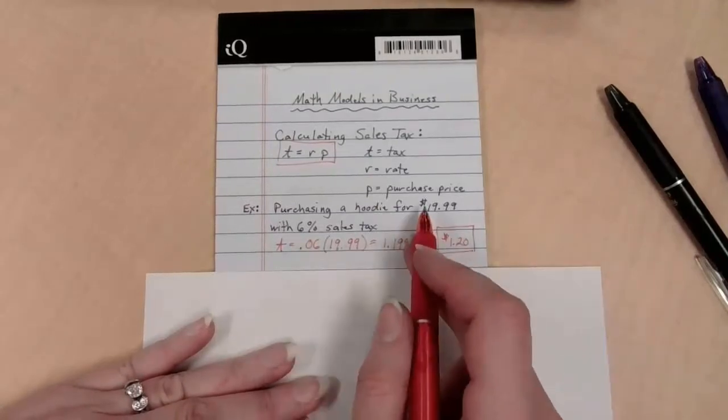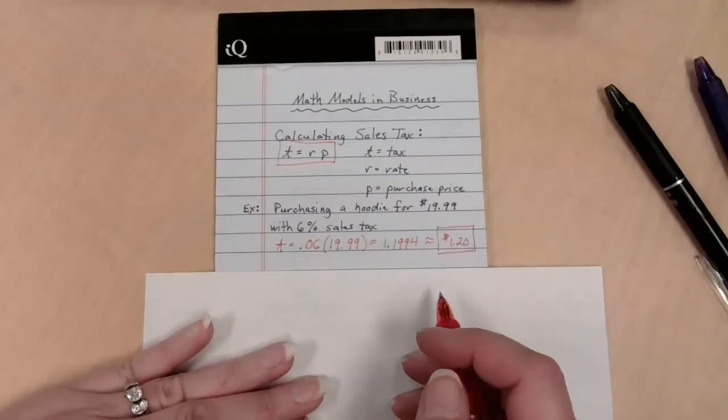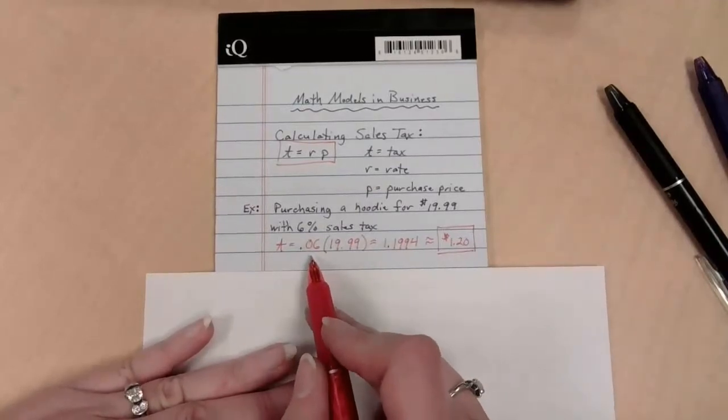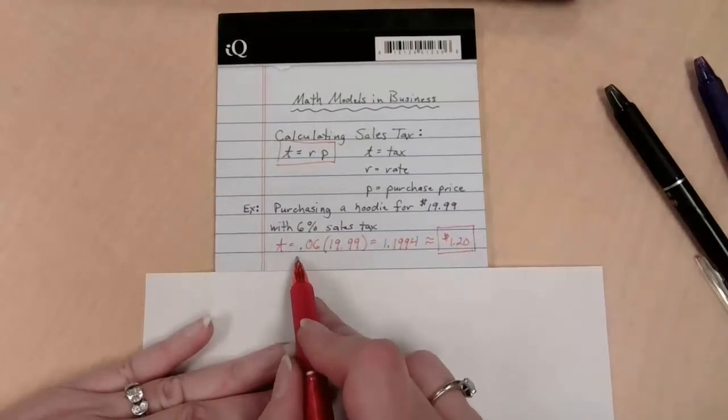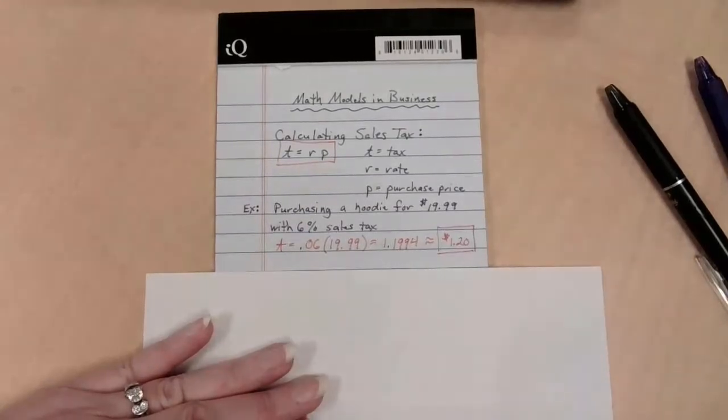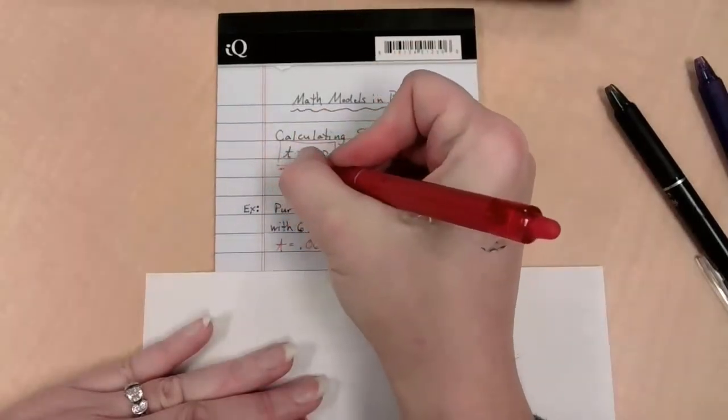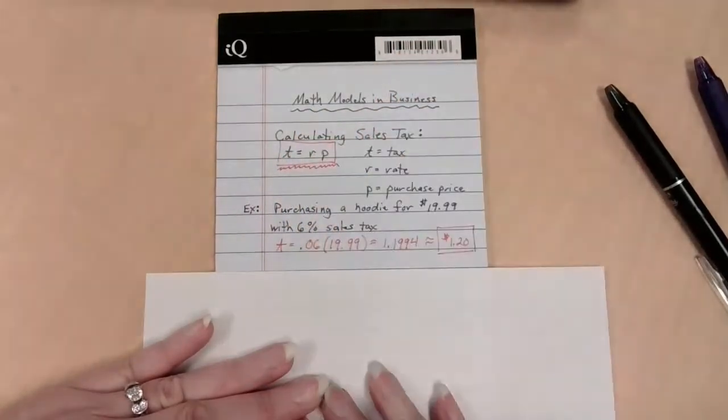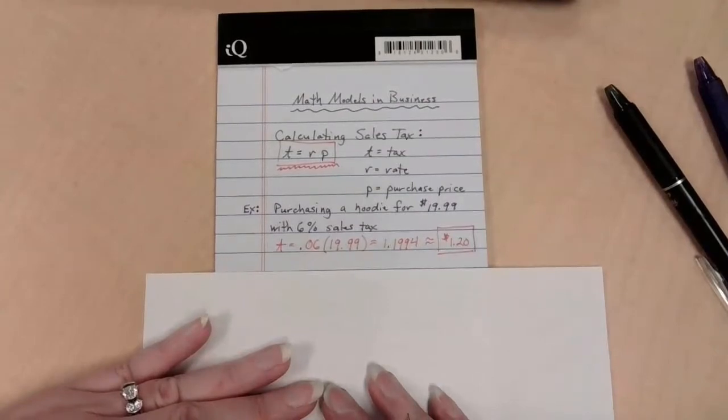So I could add that to the $19.99 to find my total for checkout. Is there a way of doing all these things at once? Could I find the tax and add it together? Absolutely. Here we only multiplied by 6%. What if we multiplied by 106%? That means I get all of the $19.99 plus 6% more. That is one way to take a shortcut. That is our first idea of the day, calculating sales tax.